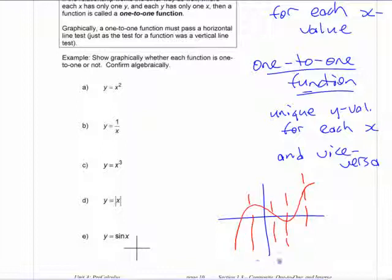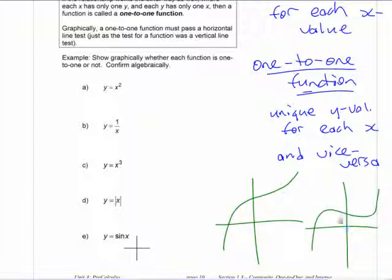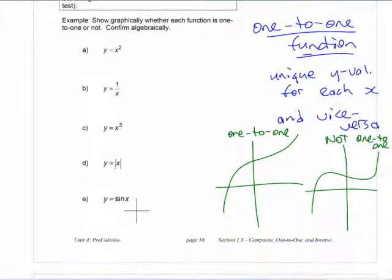Anywhere you draw a vertical line, it only crosses the curve once. If you want to check if it's one-to-one, you do it the other way as well — you check if there's a place where there's more than one x value for each y value. That's one-to-one. This is not one-to-one, because there's a place where lots of different x values have the same y value.